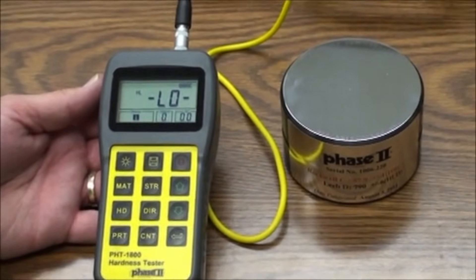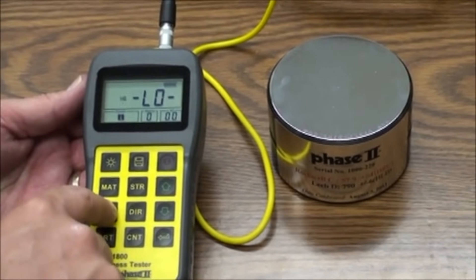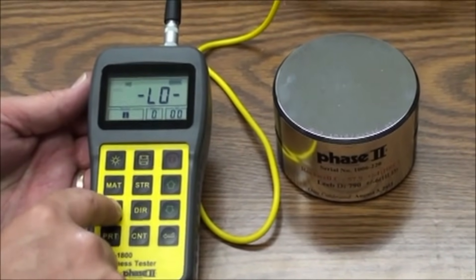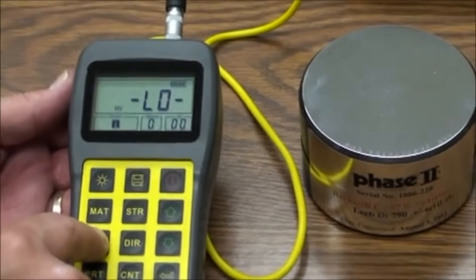Next we go to scale. Pressing the HD button will allow you to toggle through hardness scales of your choice. Please note the scales available are related to the material selected and the probe detected.